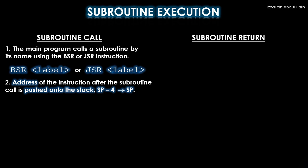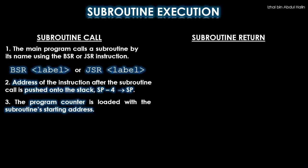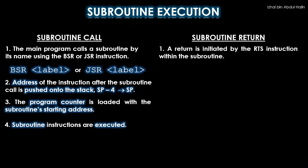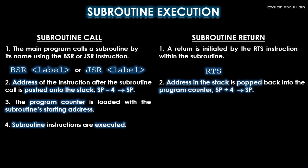Once the return address is saved in the stack, the program counter is loaded with the address associated with the subroutine's name. The program then officially jumps to the subroutine and executes its instructions. Now for the return — recall that the last instruction in any subroutine is RTS. Once the microprocessor executes this instruction, the value in the stack, which is the return address, is popped into the program counter and the stack pointer is incremented by 4. This allows the program to resume where it left off. This is the concept of subroutine execution and return simplified for you.